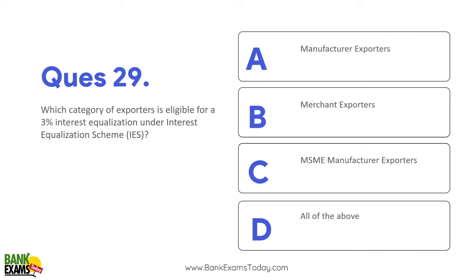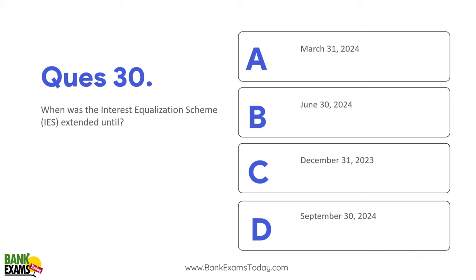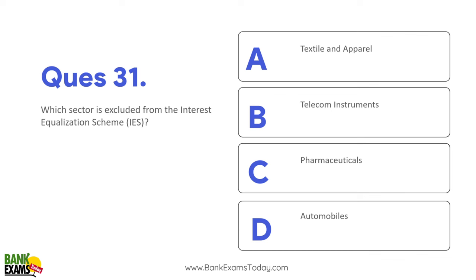Which category of exporters is eligible for 3% interest equalization under IES (Interest Equalization Scheme)? Telecom wale ko IES nahi milta. Lekin 3% wala jo benefit hai - MSME manufacturer exporters ko milta hai. When was IES extended till? IES has been extended till 30th of June 2024. Which sector is excluded from IES scheme? Telecom instrument sector has been excluded.